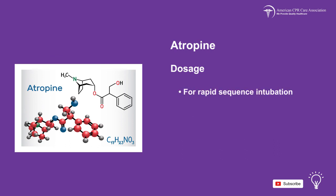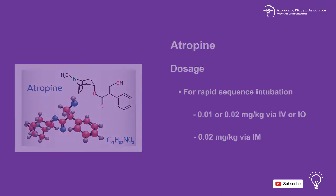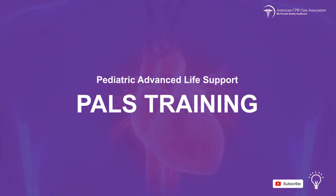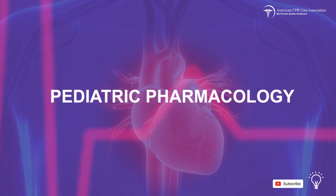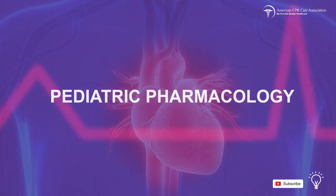For rapid-sequence intubation, the dose is 0.01 to 0.02 mg per kg via IV or IO route, or 0.02 mg per kg via intramuscular route. This concludes our first video on pediatric pharmacology. Please proceed to the next video to learn more.